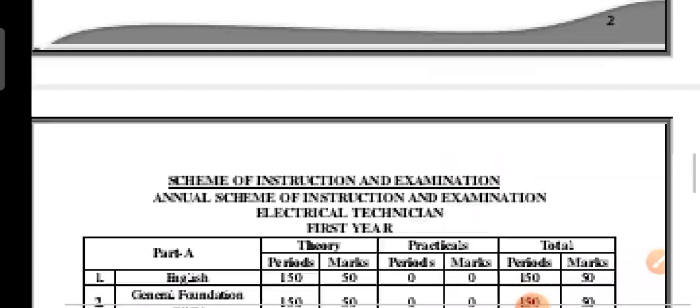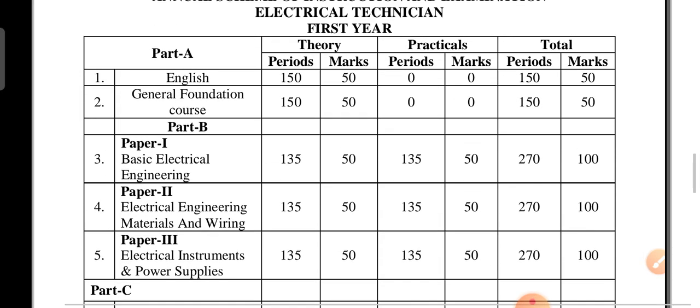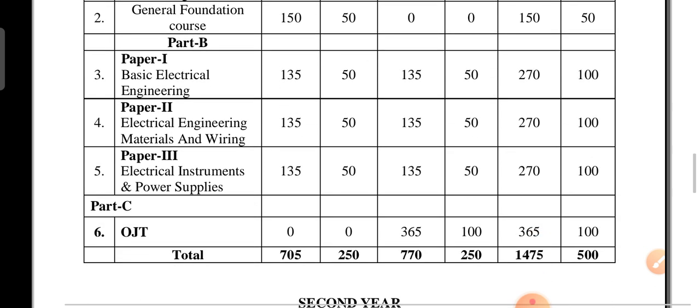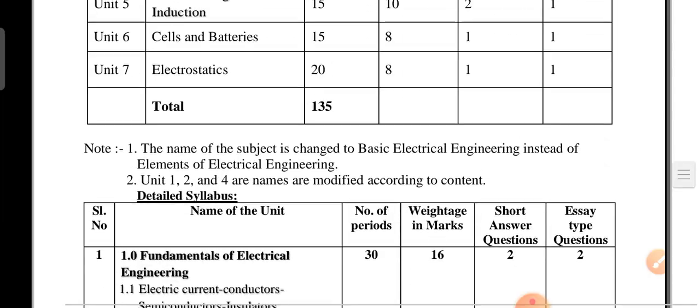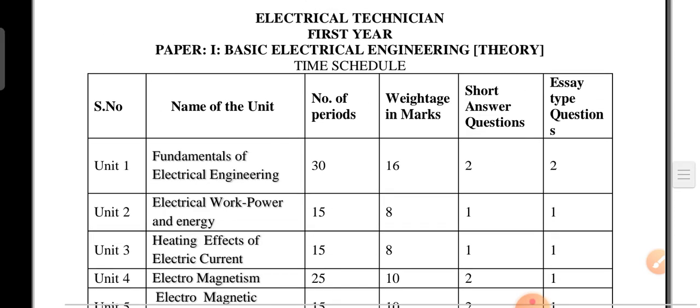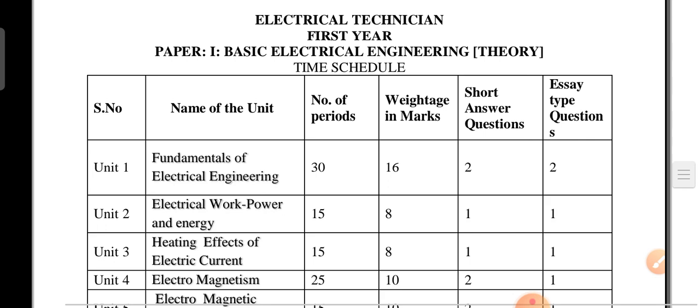You people may have the Part A two papers already — you have finished English and GFC. Next, Part B, which depends upon your course: Paper 1 is Basic Electrical Engineering, Paper 2 is Electrical Engineering and Materials Writing, and Paper 3 is Electrical Instruments and Power Supplies.